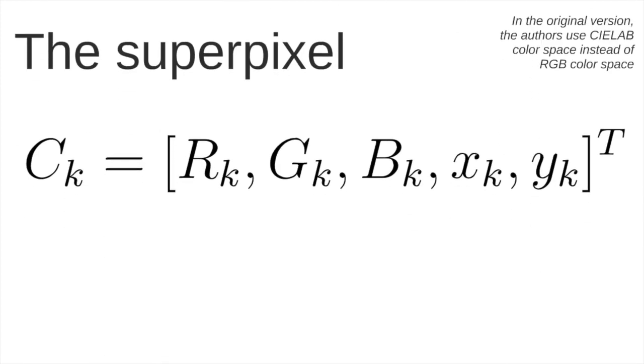So the idea of the superpixel as proposed by the authors is that a single superpixel C is a group of five values composed in this video by RGB components and also X and Y coordinates. It's also important to say that in the original version of the algorithm, the authors used the CIELAB color space instead of RGB color space. But we are using RGB in this case to simplify.